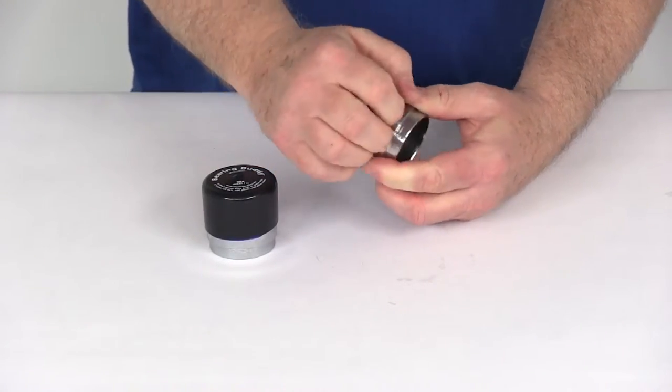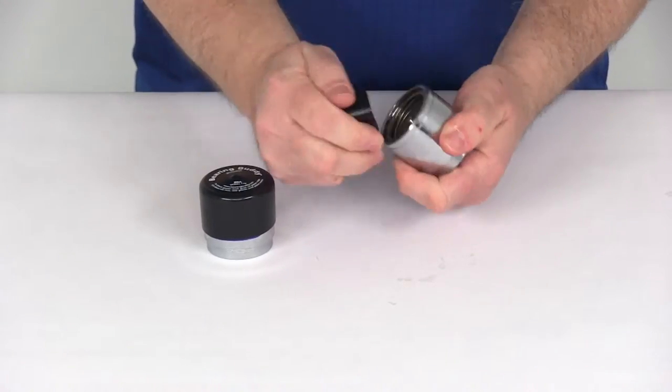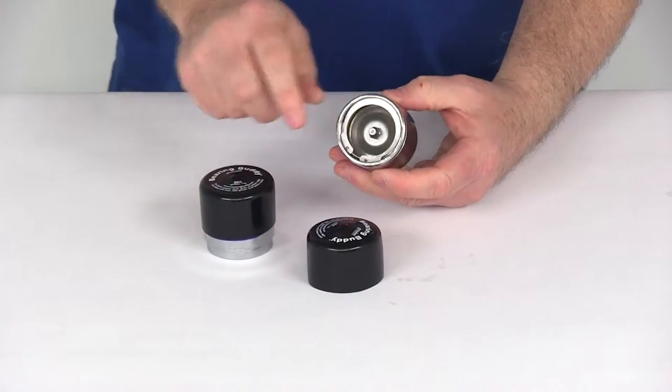This Bearing Buddy design is a very easy way to protect your bearings by keeping water out and ensuring that enough grease is in the hub.